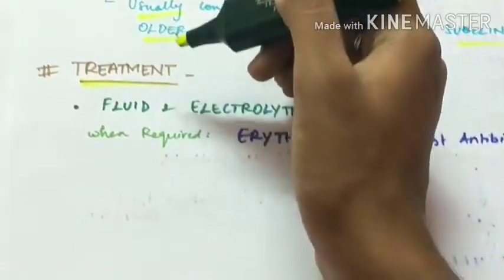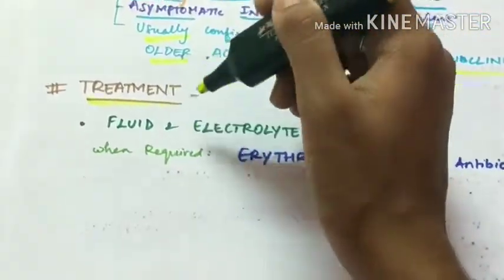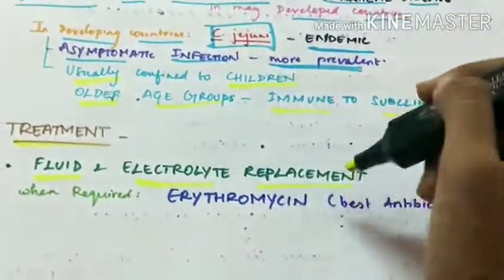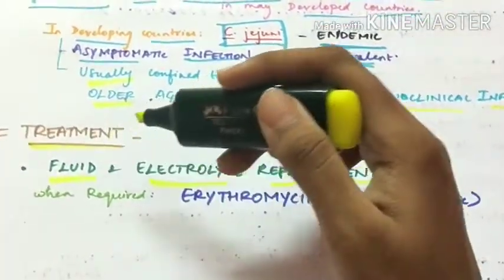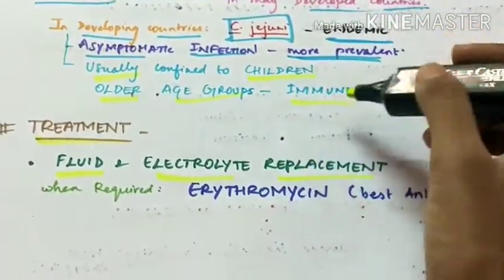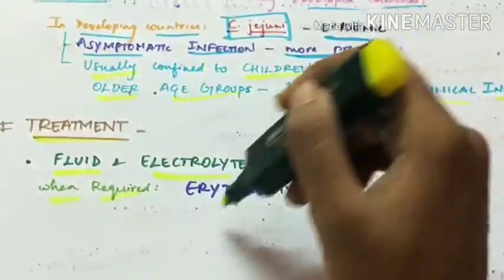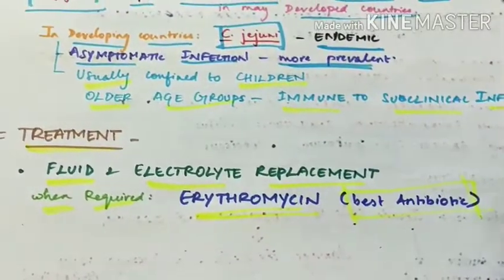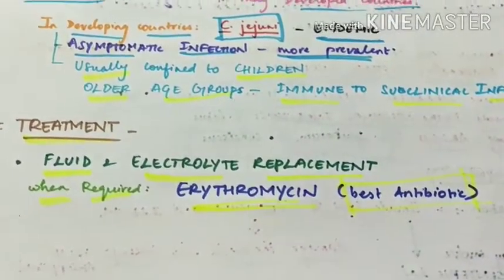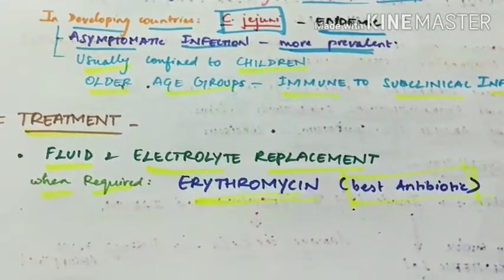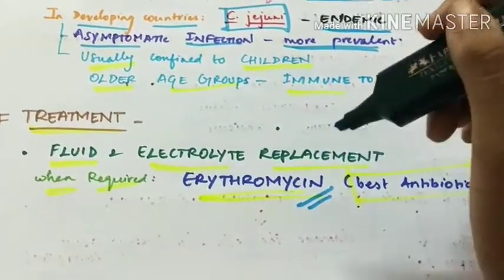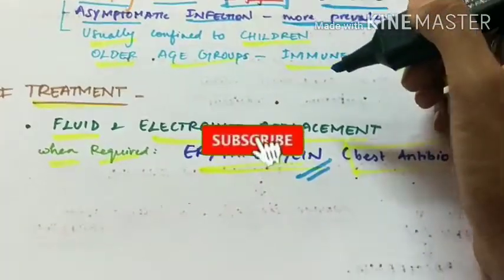Treatment for diarrhea caused by Campylobacter is generally fluid and electrolyte replacement. When antibiotic therapy is required, erythromycin is the best antibiotic against Campylobacter.